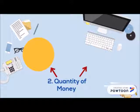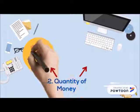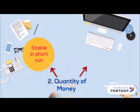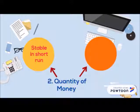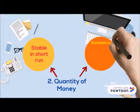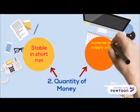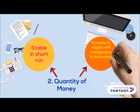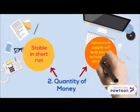Modern quantity theory of money: the demand for money is relatively stable in the short run. An increase in the supply of money will leave people holding cash balances in excess of the amounts they want.